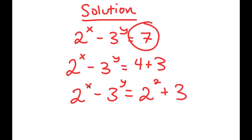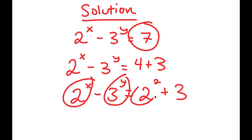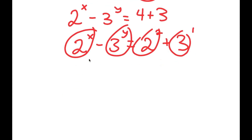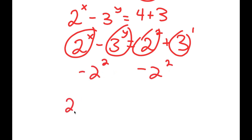Notice how I have something in the form 2 to the power of a number minus 3 to the power of a number equal to 2 to the power of a number, and I also have 3 to the power of 1. I'm going to group the powers of 2 together and the powers of 3 together by subtracting 2 squared on both sides. So I get 2 to the power of x minus 2 squared minus 3 to the power of y is equal to 3.